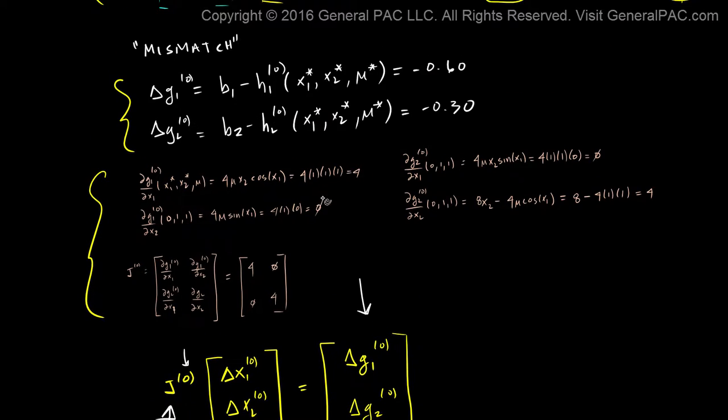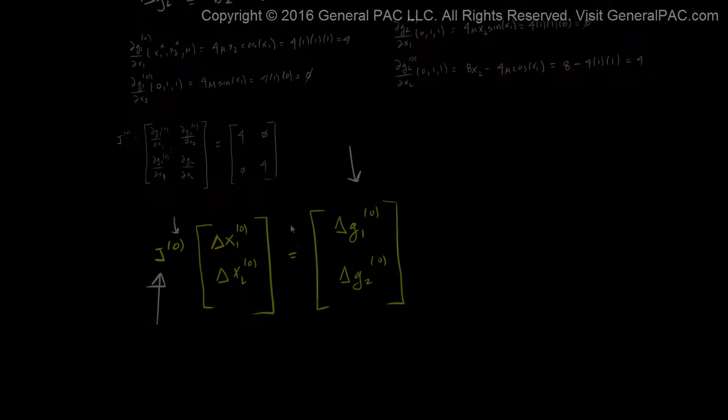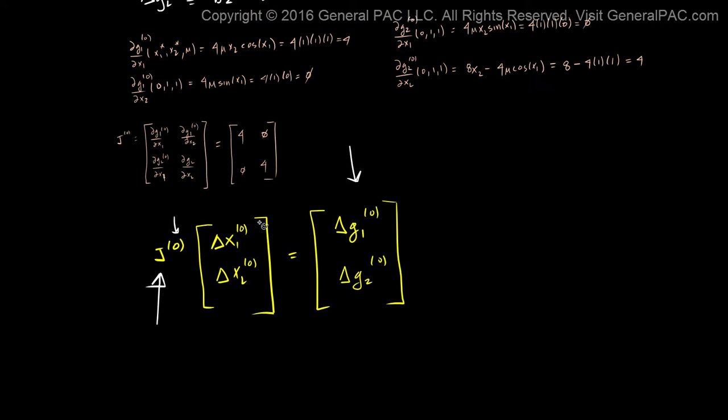We have delta g1 and delta g2 or our mismatch for the initial values. But what we don't have is the change of x1 for the 0th iteration and the change of x2 for the 0th iteration. We have to figure out what delta x1 is and delta x2 is.